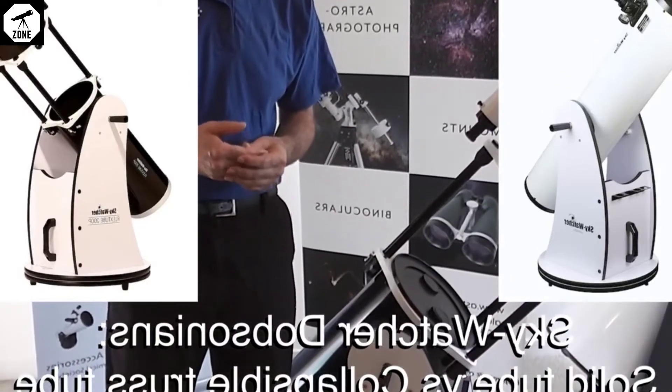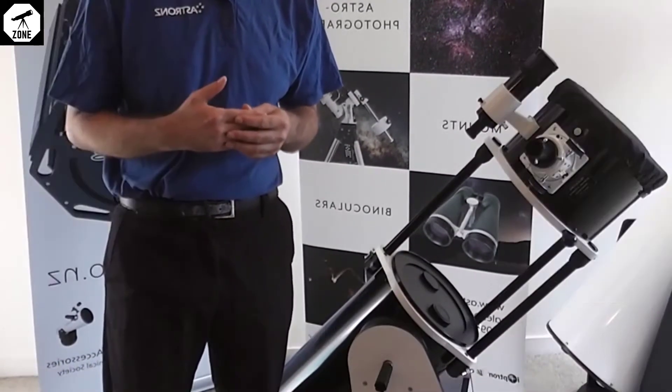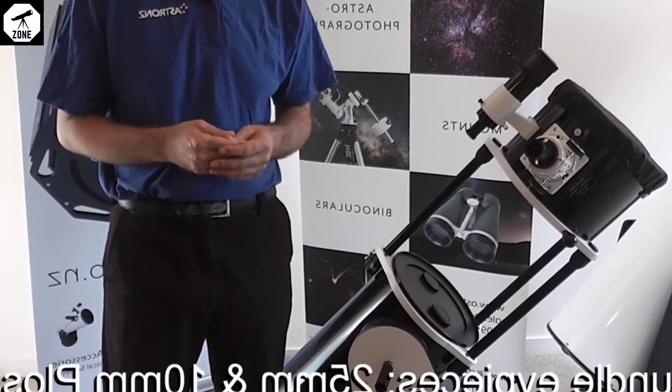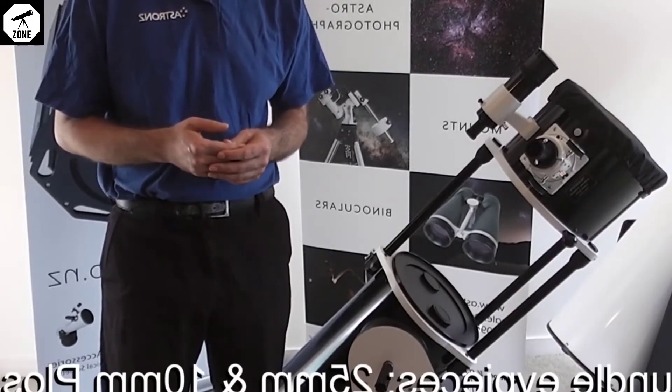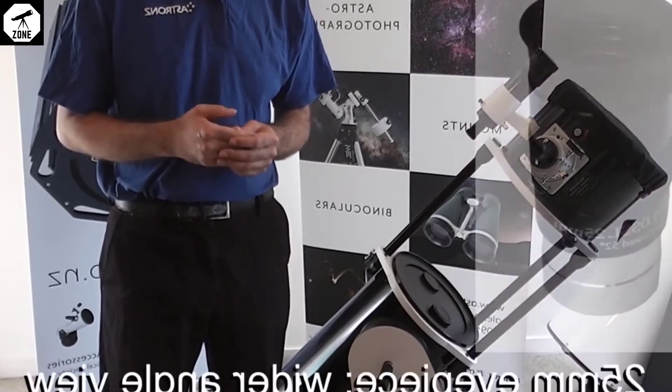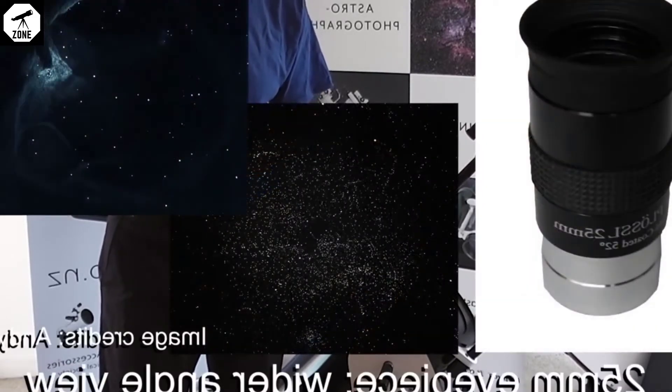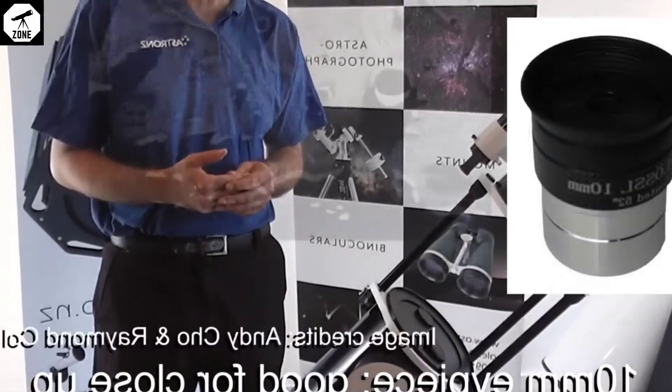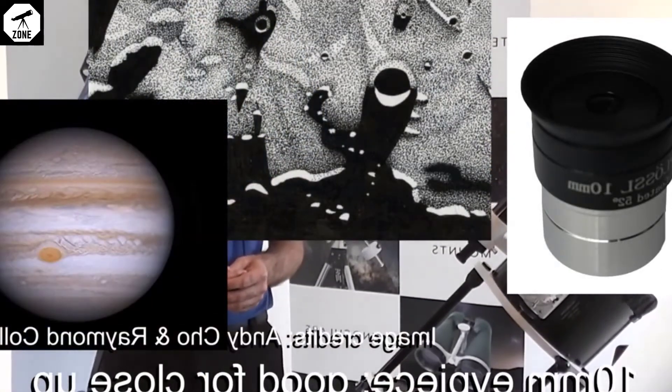The telescopes come standard with two eyepieces, a 25mm and a 10mm plus a light piece. The 25mm is for a low magnification, wider angle field of view. The 10mm is good for close-up looks at the moon and planets.